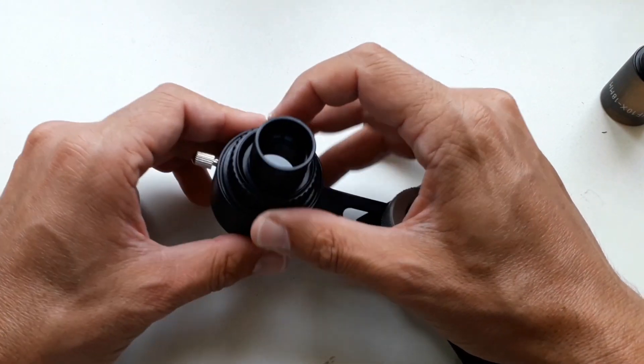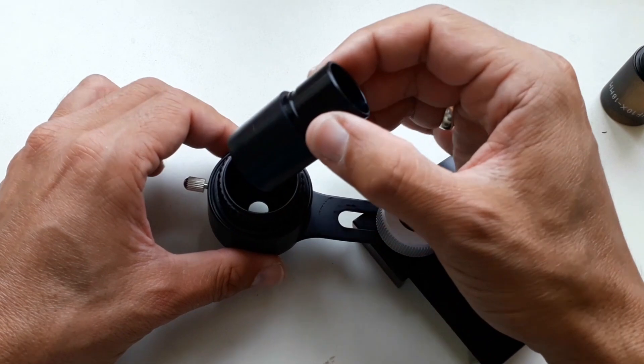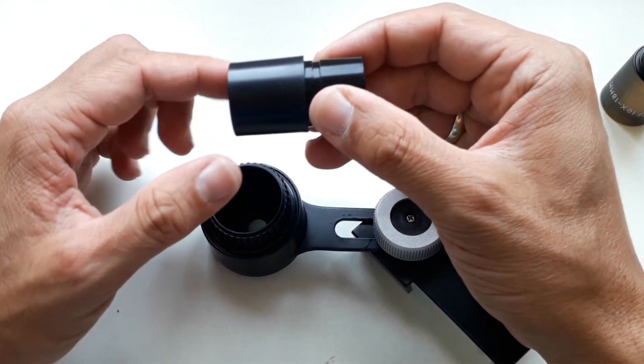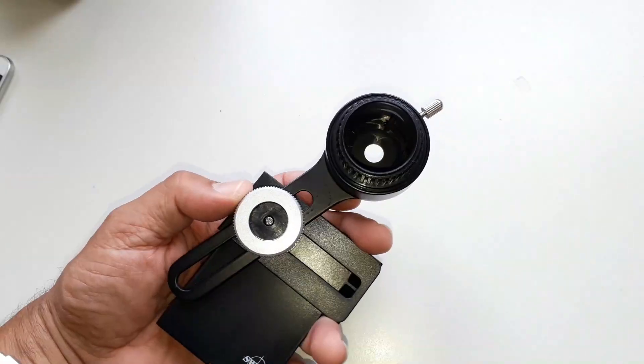For example right now even if you tighten it it's still loose. What you can do is wrap some cardboard around here to make it fit and I'm going to show you later how to do this.